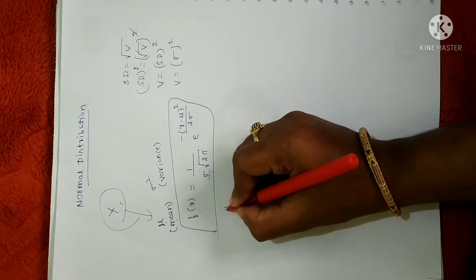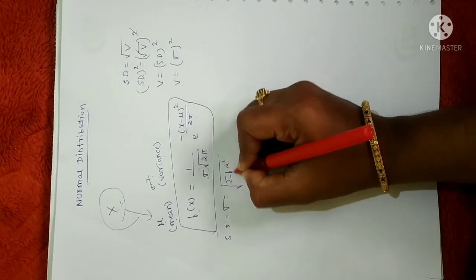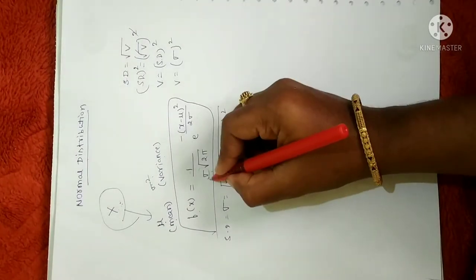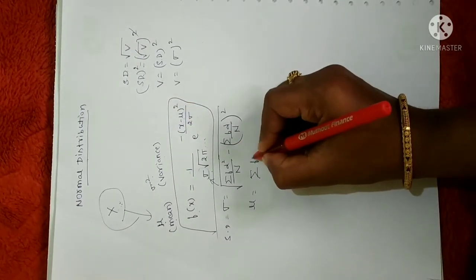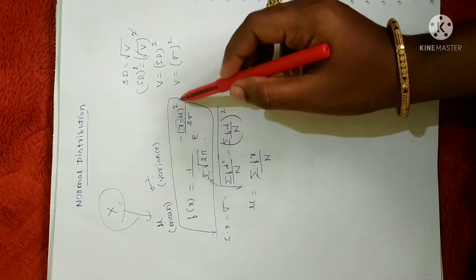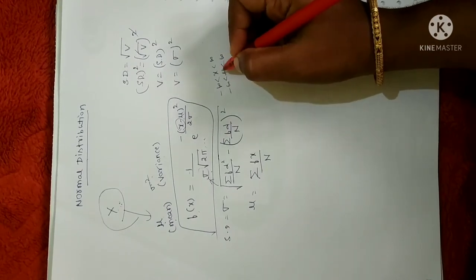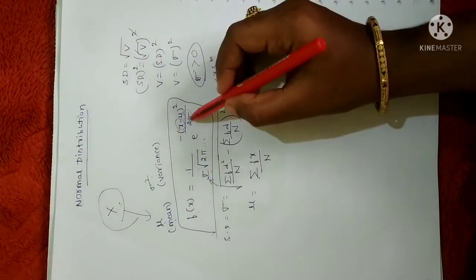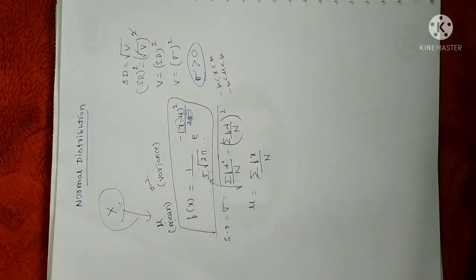For any random variable x with parameter mu (mean) and sigma squared (variance), it is said to be a normal distribution only when its density function f of x equals 1 by sigma into square root of 2 pi times e to the power of minus x minus mu whole square divided by 2 sigma squared. Where sigma is standard deviation, calculated using the formula involving sigma f d squared divided by n minus sigma f d divided by n whole squared. Mu is calculated as sigma f x divided by n. The x and mu values lie between minus infinity to plus infinity, and sigma must be greater than zero.